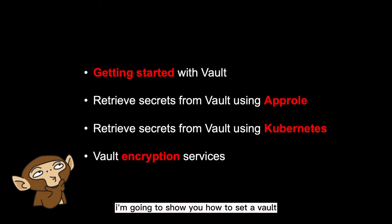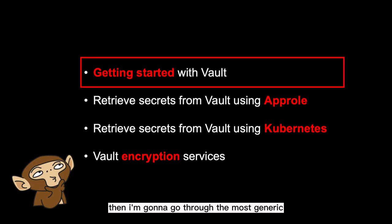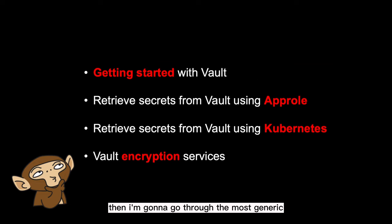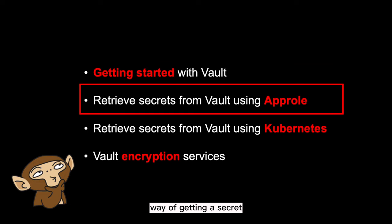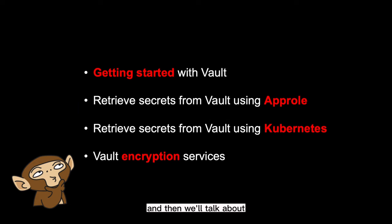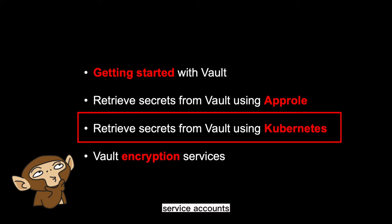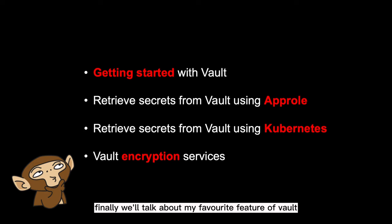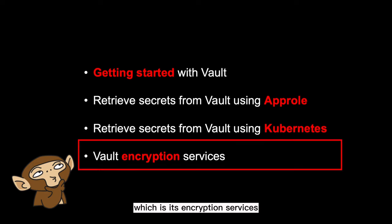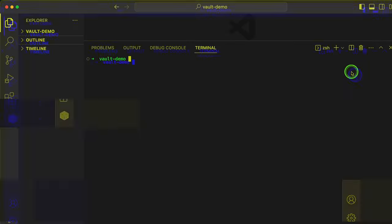So in this video, I'm going to show you how to set up Vault. Then I'm going to go through the most generic way of getting a secret using what's known as app role. And then we'll talk about something a little bit more slick, which is getting secrets with Kubernetes service accounts. Finally, we'll talk about my favorite feature of Vault, which is its encryption services.